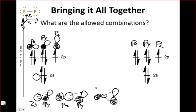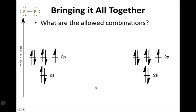What this boils down to is that really there are only five allowed combinations between the atomic orbitals on two fluorine atoms.